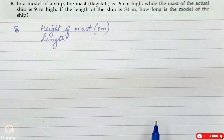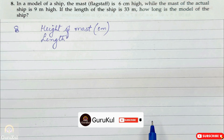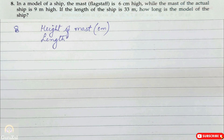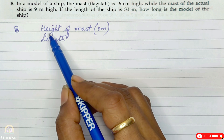Now question number 8. In a model of a ship, the mast — which is called the flag staff — is 6 cm high, while the mast of the actual ship is 9 meters high. If the length of the ship is 33 meters, how long is the model of the ship?